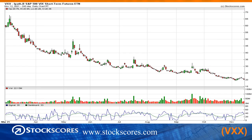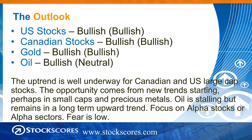The fear chart shows very little fear, and therefore nothing to really be concerned about, although that can change quickly if we get a break of the upward trend line. My ratings: bullish on both time frames for U.S. and Canadian stocks. Gold, I've switched to bullish on both time frames. Oil, bullish long-term but neutral short-term. The better opportunity comes from where we see new trends starting — right now that's small caps, which broke out two weeks ago, and precious metals, which have been showing life recently.